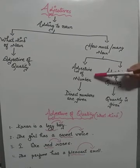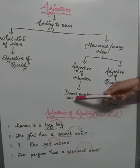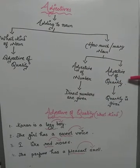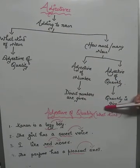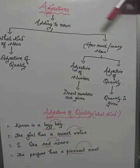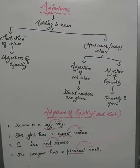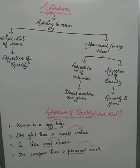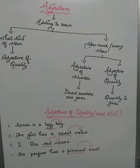In adjectives of number, the numbers are given, and in adjectives of quantity, the quantity is given. See this first. Now let us go a little bit into details.